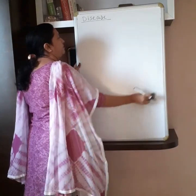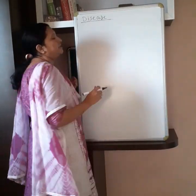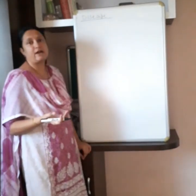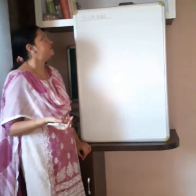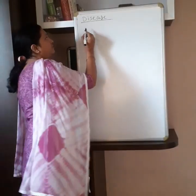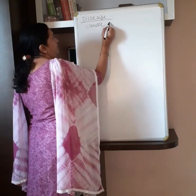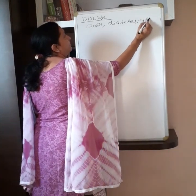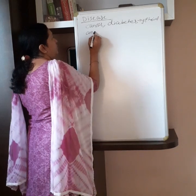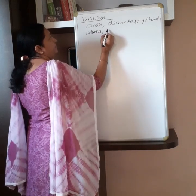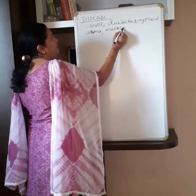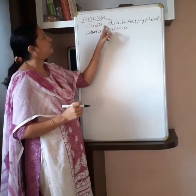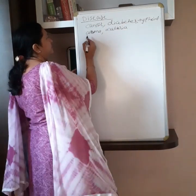Diseases are normally categorized or divided into two types. You know the names of diseases like cancer, AIDS, diabetes, malaria, typhoid, corona — these are different diseases. So diseases are divided into two categories.